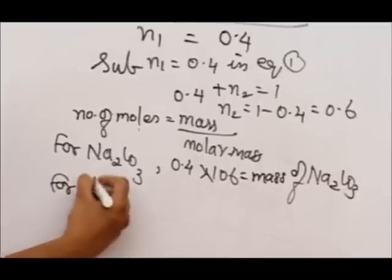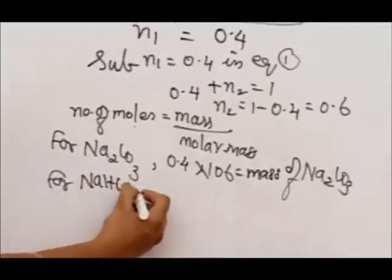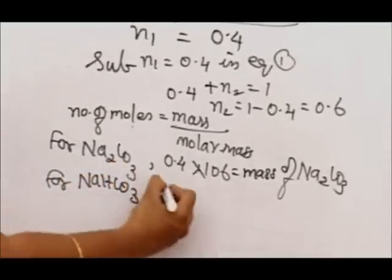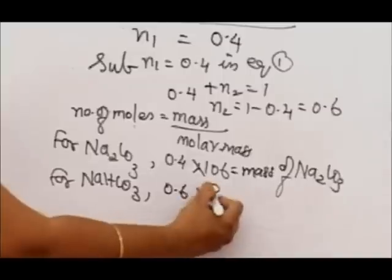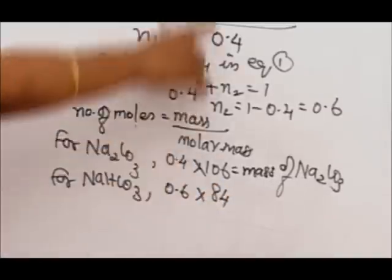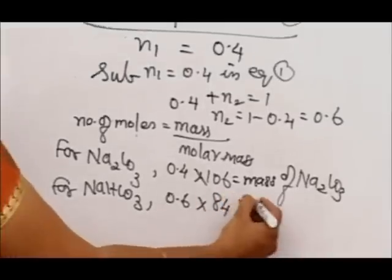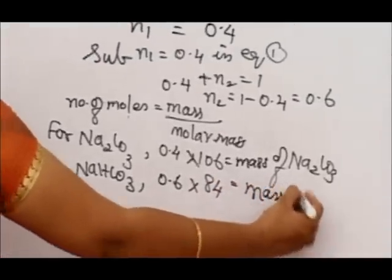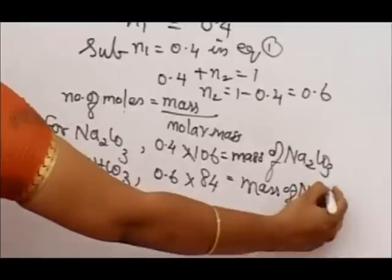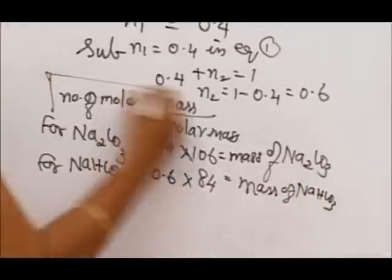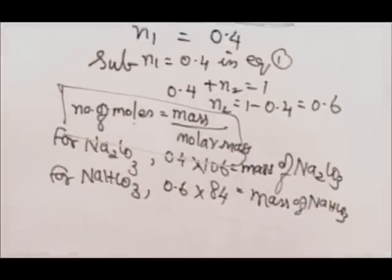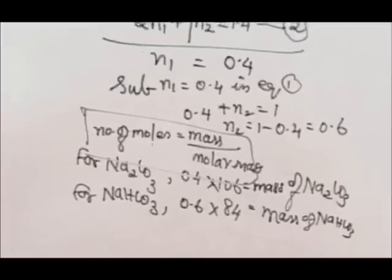For NaHCO₃, it is 0.6 times 84. 84 is the molecular weight of NaHCO₃. So 0.6 times 84, which is the mass of NaHCO₃. This I obtained from the same formula: number of moles equals mass divided by molar mass.